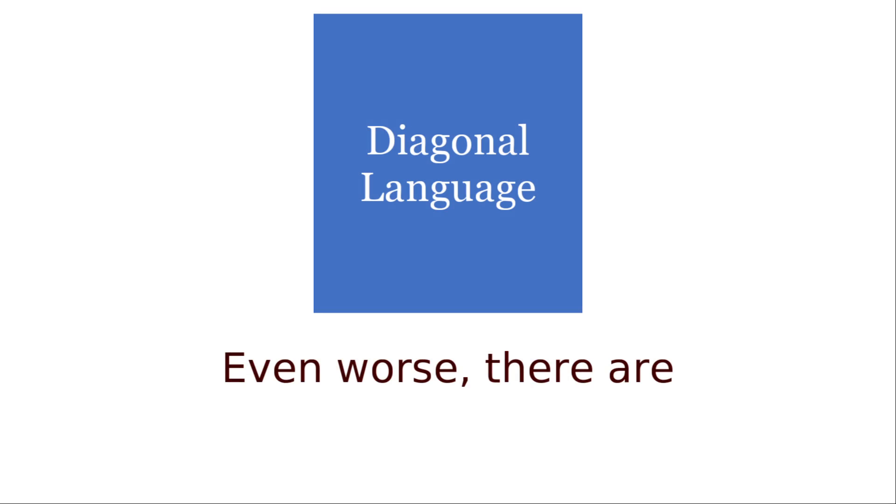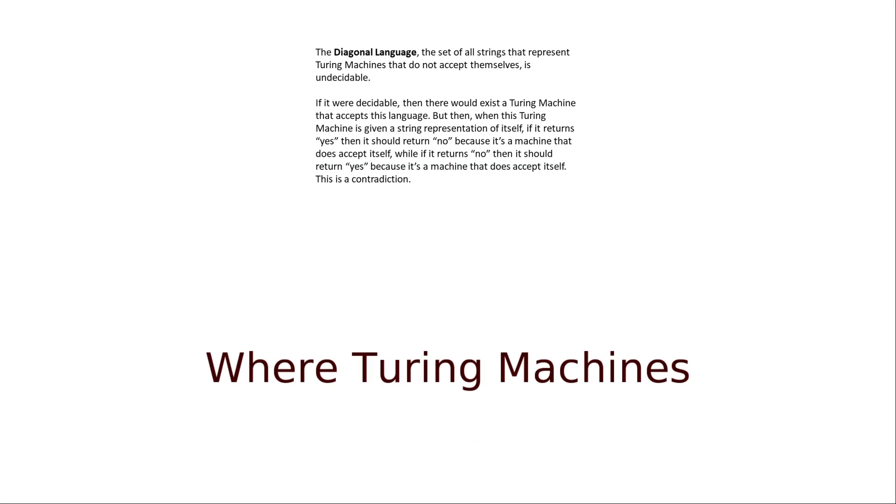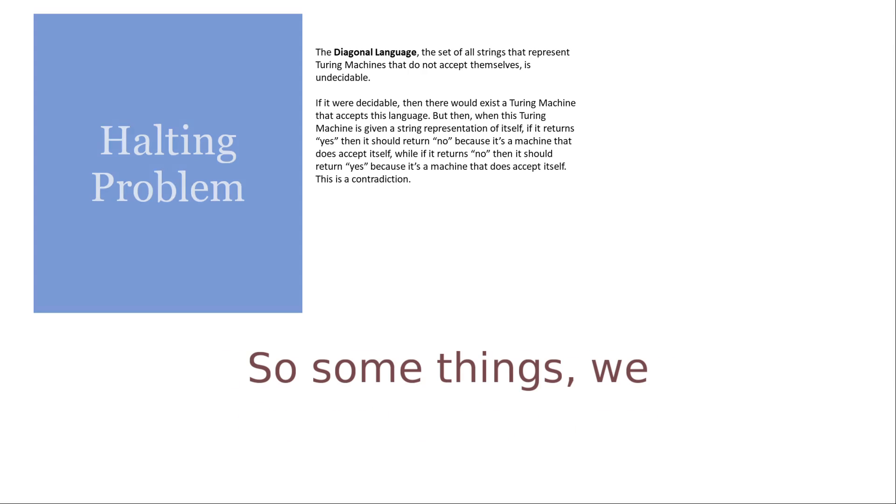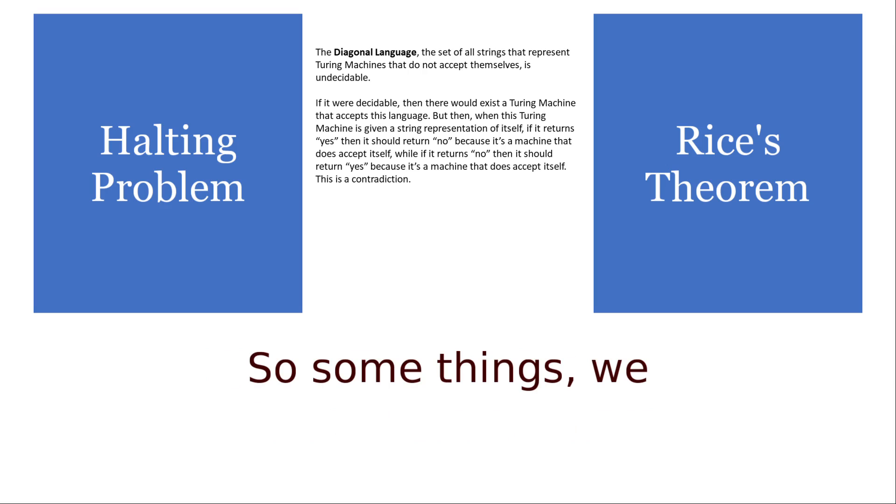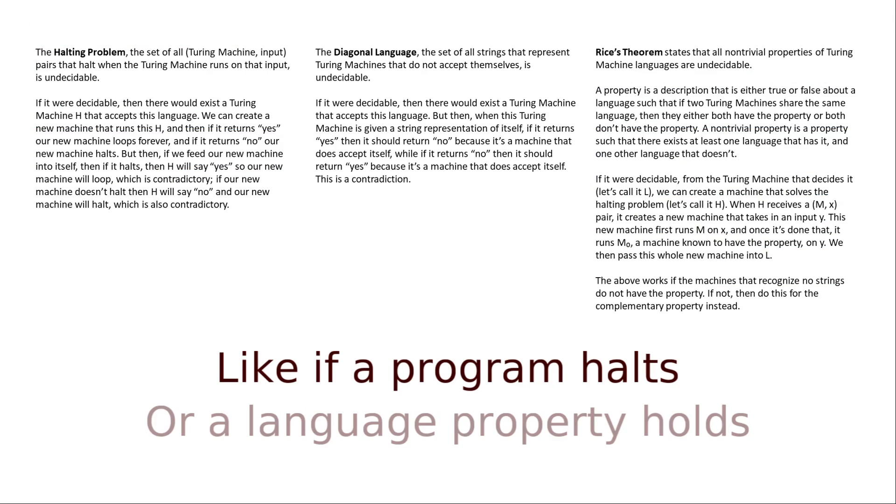Even worse, there are some problems where Turing machines cannot decide them. So some things we can't in general know, like if a program halts or a language property holds.